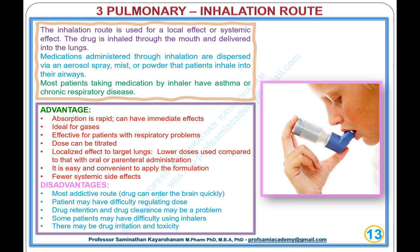Type 3, Pulmonary: Inhalation Route. The inhalation route is used for local or systemic effects. The drug is inhaled through the mouth and delivered into the lungs via aerosol spray, mist, or powder. Most patients taking medication by inhaler have asthma or chronic respiratory disease.